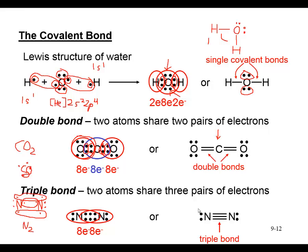We now know how to draw simple molecular compounds with covalent bonds in Lewis structures. A double bond is shown as two lines indicating four electrons shared, and a triple bond as three lines indicating six electrons shared.